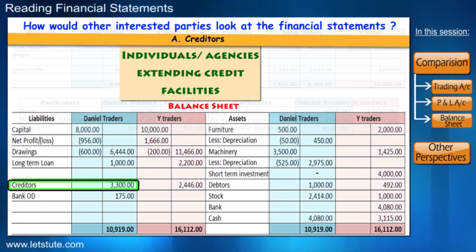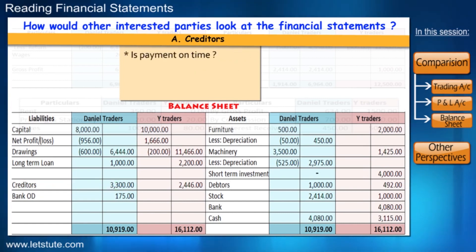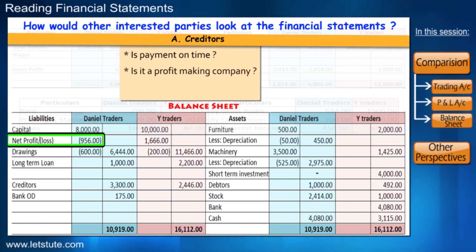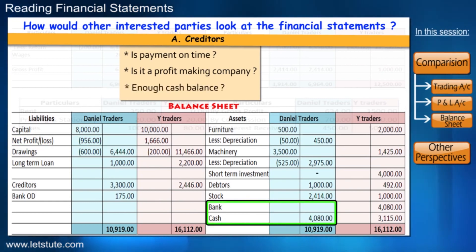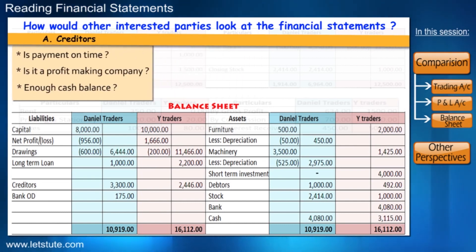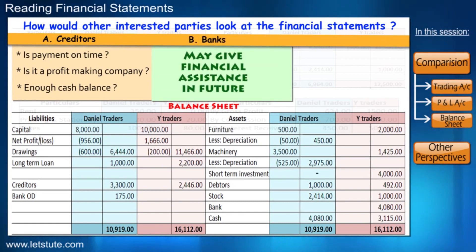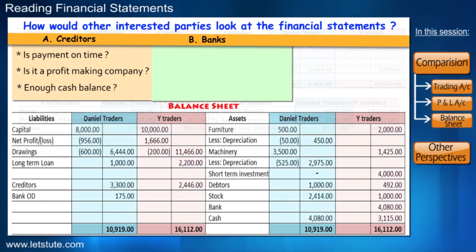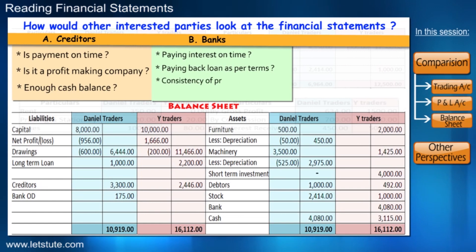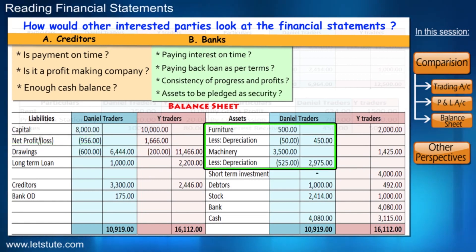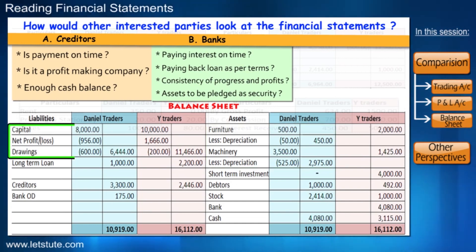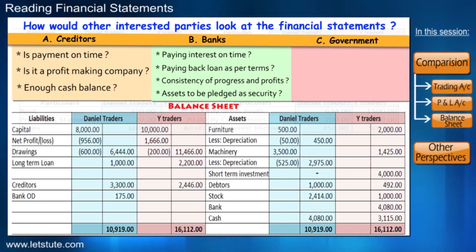Creditors are primarily concerned whether Daniel Traders will pay them on time, and they will also see if it is a profit-making company and whether the business maintains a reasonable cash balance — that way creditors would feel that their amount due is safe with the firm. They will also check if the company is able to pay interest in time and pay back loans as per agreed terms, look at consistency of progress and profits, examine assets that can be pledged as security, and review the capital deployed by the owner.